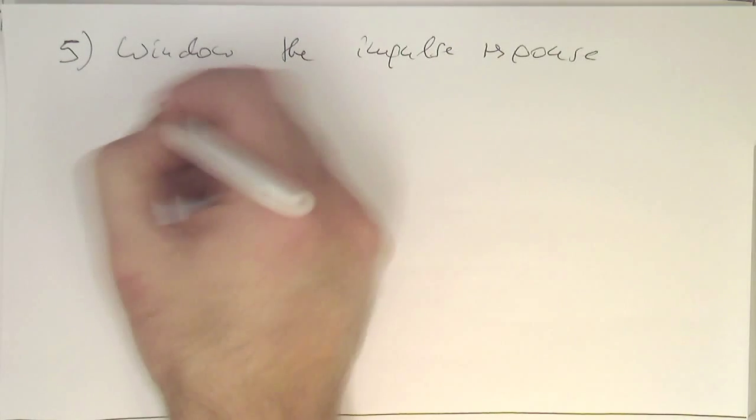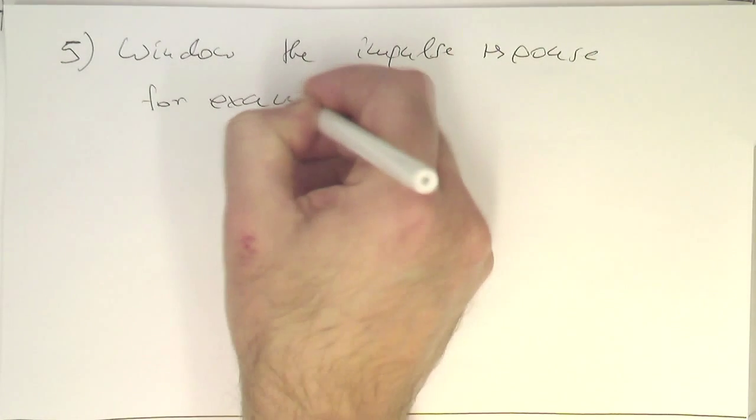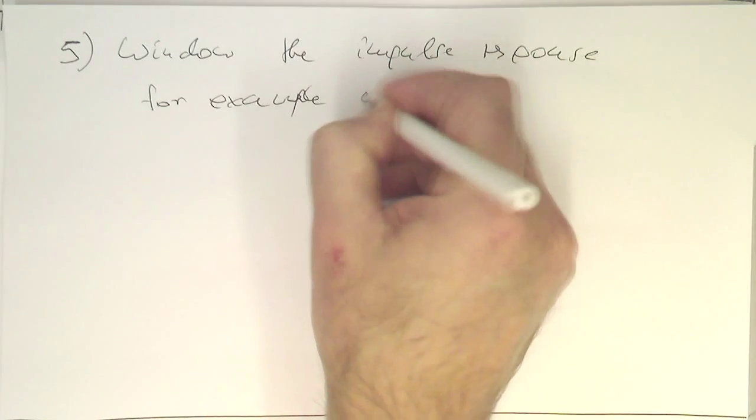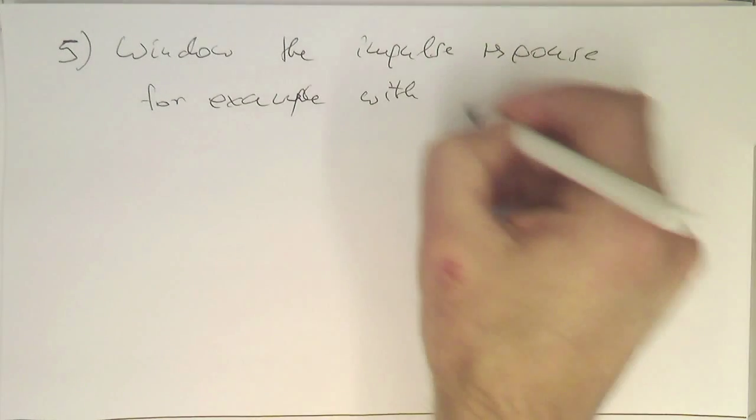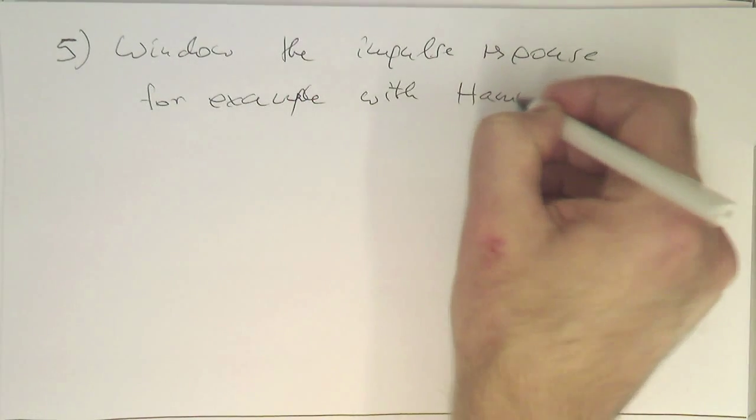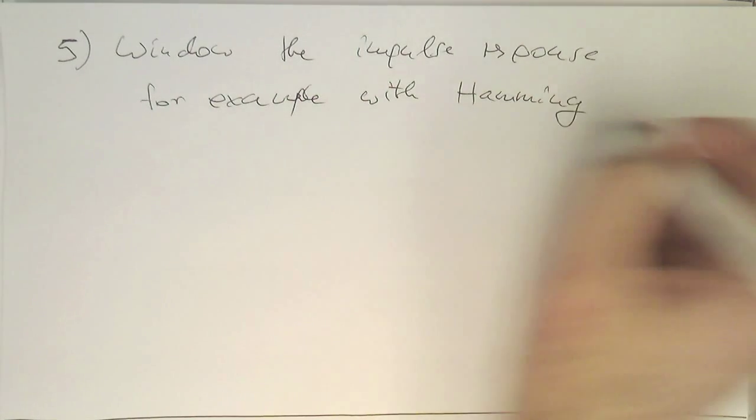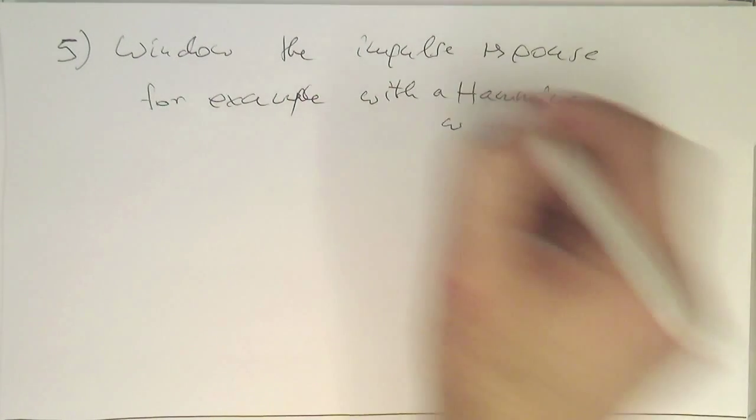So, then step 5 is window the impulse response. So, for example, with a Hamming window.